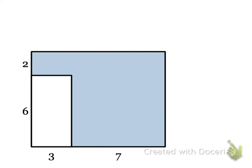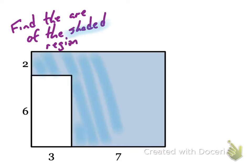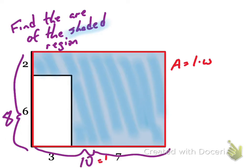Let's take a look at an example. This is one of those problems where you have to find the area of the shaded region. They've given us the dimensions, and remember, a rectangle has opposite sides that are the same length — so these are all rectangles. What we're trying to do is find the area of the darker shaded region here.